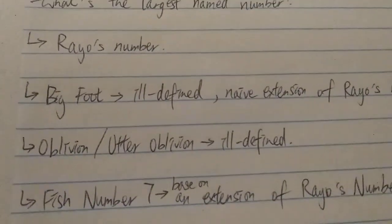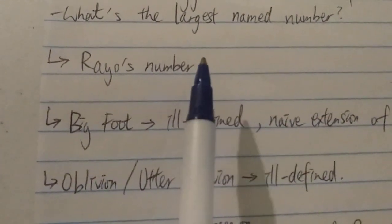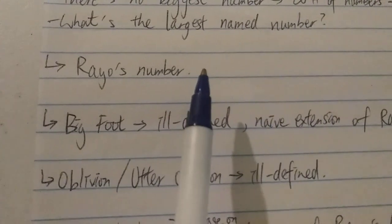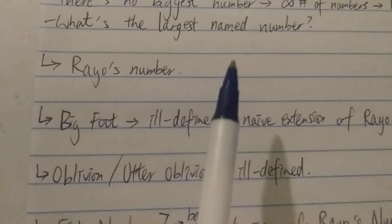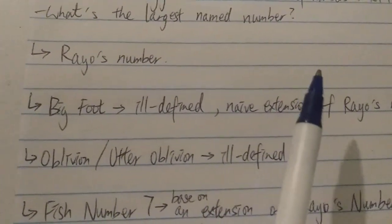So let's talk about that right now. First, we have Rayo's number, which is quite famous and generally accepted as the largest named number for a very long time.